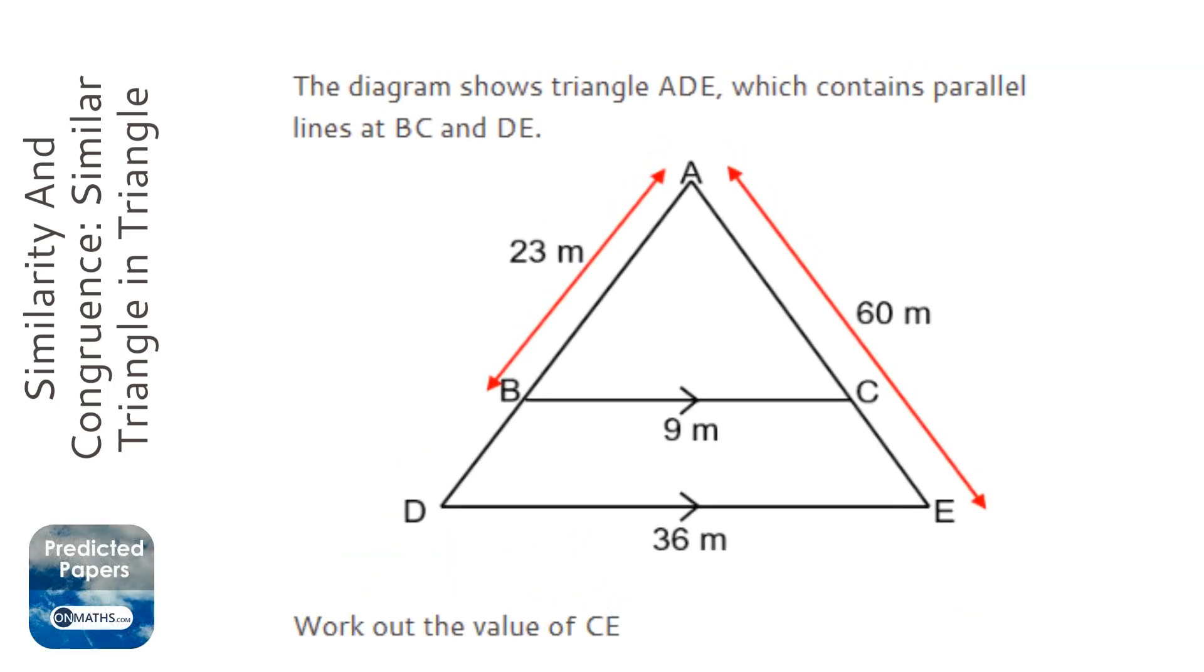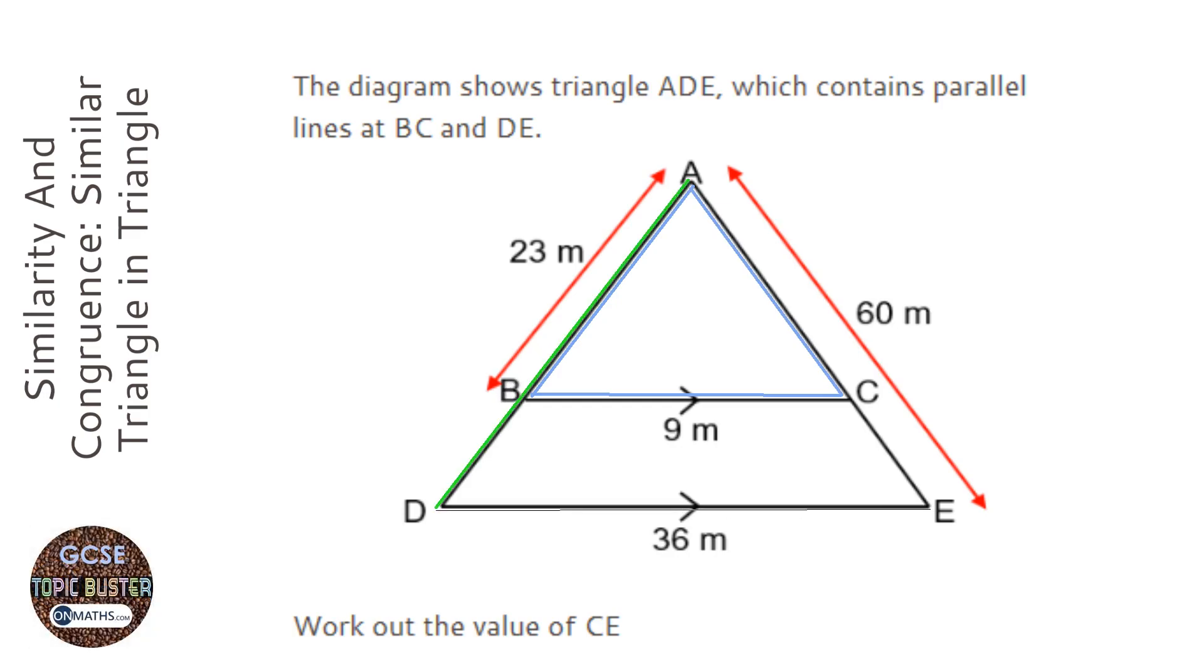Okay, with this question, the first thing to realize is that we have two similar triangles here. We've got the smaller triangle here and the bigger triangle here. They are mathematically similar because this angle is going to be the same as this angle because they're parallel lines, those are corresponding angles. This angle is going to be the same as this angle for the same reason, and this is a shared angle. So two triangles with exactly the same angles, therefore they have to be mathematically similar.